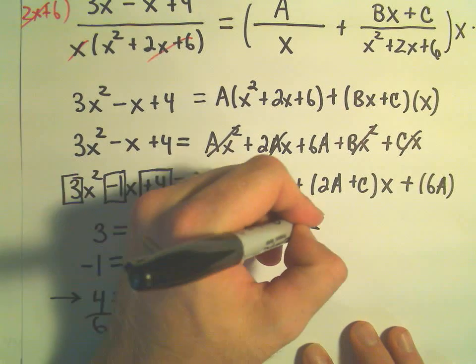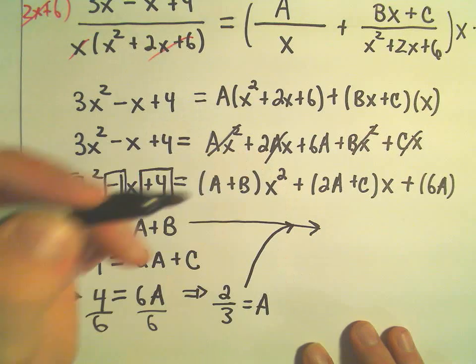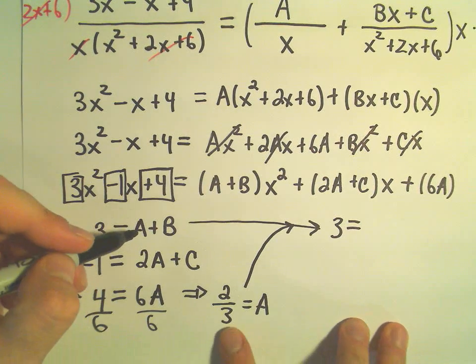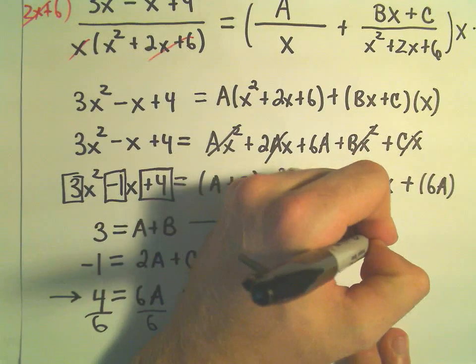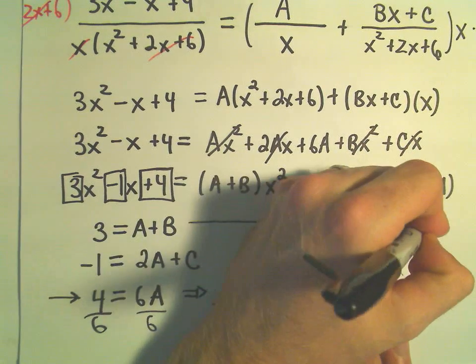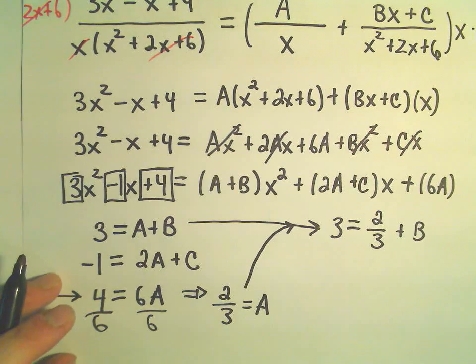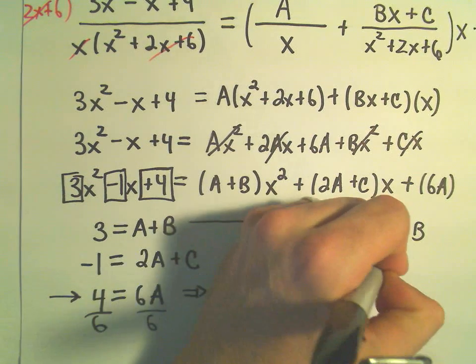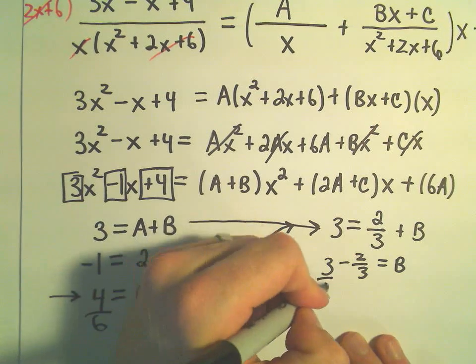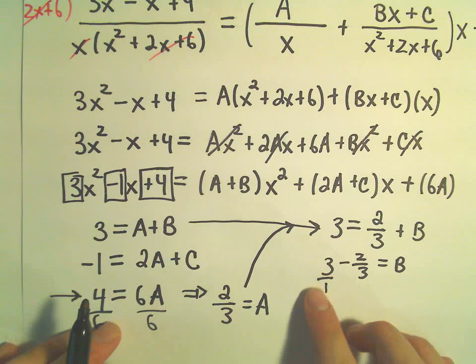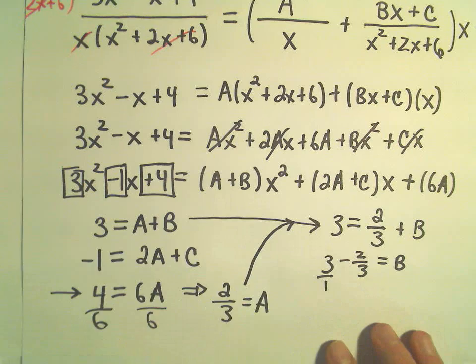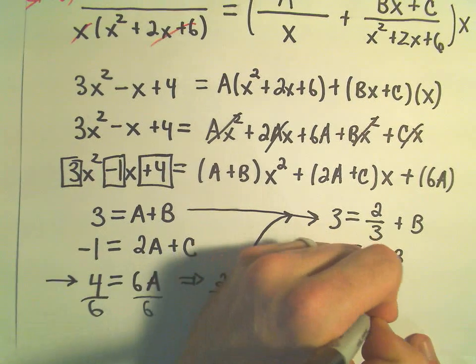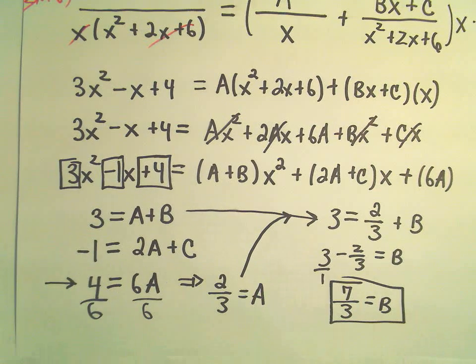Well, now I can take my first equation and use this information as well. So it says 3 equals A, which we figured out is 2/3, plus B. And now I can solve for B pretty easily. So I'll take 3 - 2/3. That's going to be our value for B. Well, you could multiply top and bottom by 3. We would get 9/3 - 2/3. 9 - 2 would be 7/3. That would be our value for B.